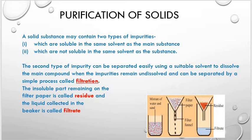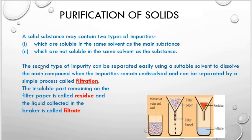A solid substance may contain two types of impurities: number one, which are soluble in the same solvent as the main substance, and number two, which are not soluble in the same solvent as the main substance. The second kind of impurity can be easily separated by using a suitable solvent to dissolve the main compound, when the impurities will remain undissolved and will be easily separated by filtration.